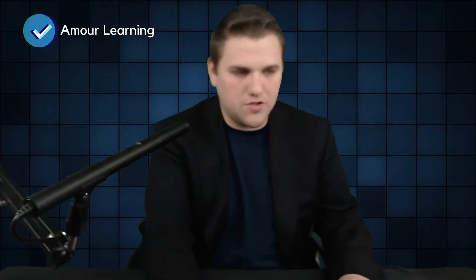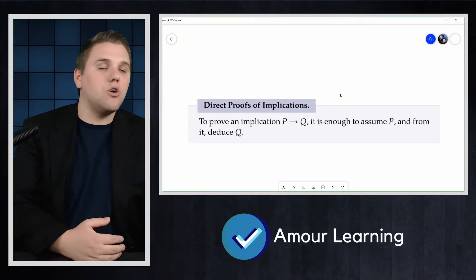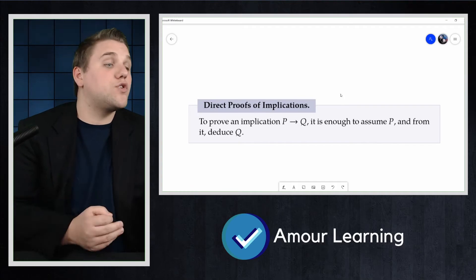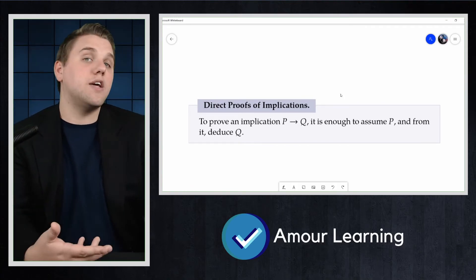Now in discrete math, we will be proving many implications with what are known as direct proofs. To prove an implication P implies Q with a direct proof, it is enough to assume P and from it deduce Q.